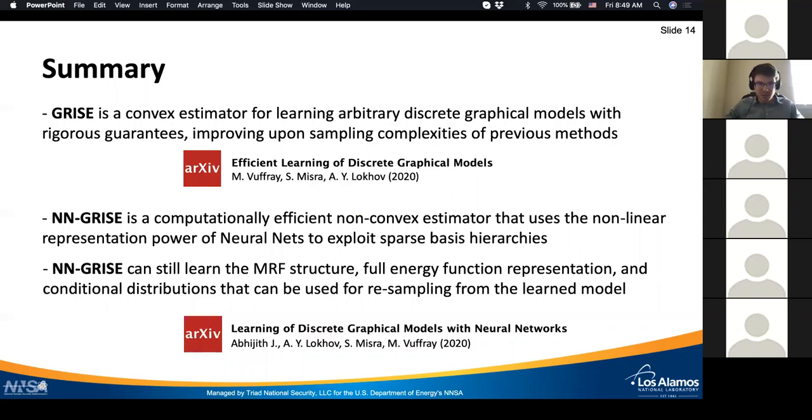To summarize, I've talked about two estimators. The first one is GRISE, which is a convex estimator for learning general discrete graphical models in an arbitrary parametrization and which comes with rigorous guarantees. If you look closely at applications to previously known sub-cases such as Ising models or pairwise Potts models or binary models with multi-body interactions, in all these cases the sample complexity of GRISE improves upon previously known methods. I've also talked about the neural net based generalization of the GRISE estimator, which provides a computational boost to the learning problem.